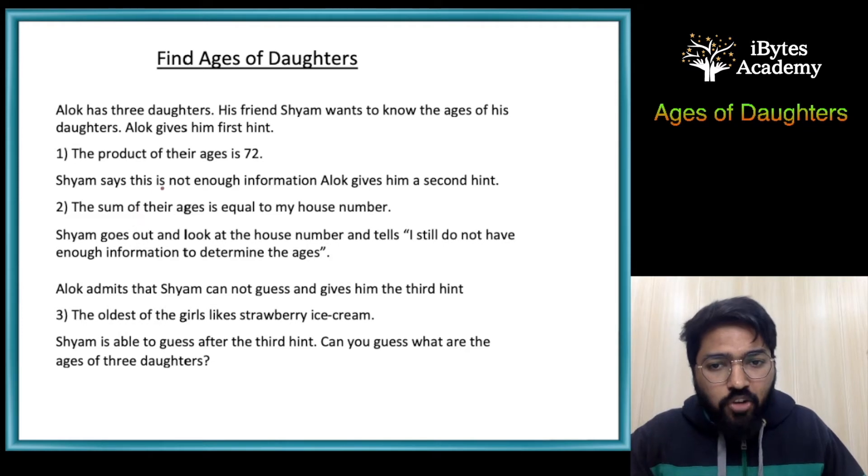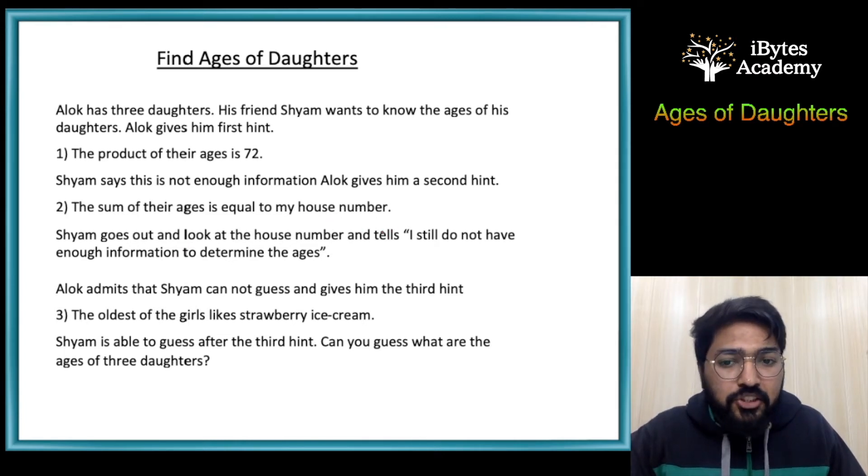The first hint is: the product of their ages is 72. Shyam says this is not enough information, so Alok gives him another hint. The sum of their ages is equal to my house number. Shyam looks at the house number and says he still doesn't have enough information to determine the ages.